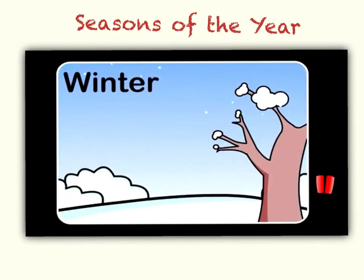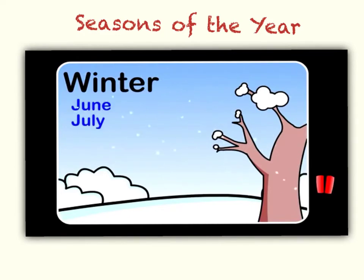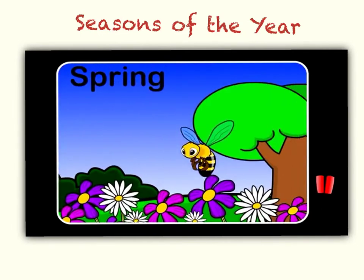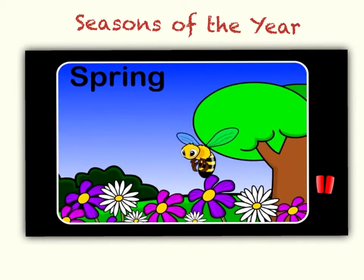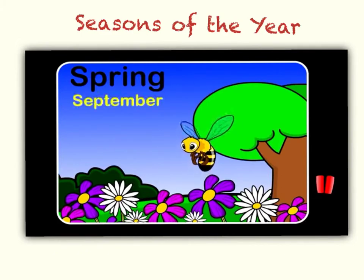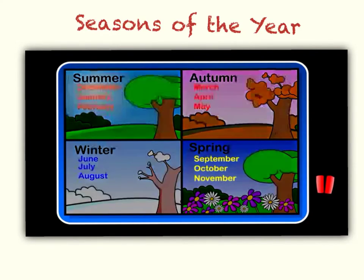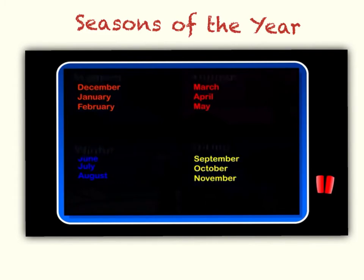Winter — then it turns cold and winter arrives. The winter months are June, July, and August. Spring — after winter, it begins to warm up again. The flowers bloom and it is spring. The spring months are September, October, and November. Each month belongs to a season. There are 12 months in a year and four seasons. Well done.